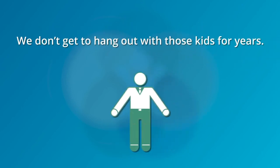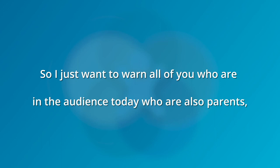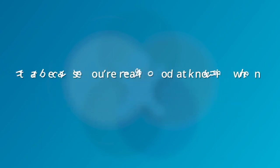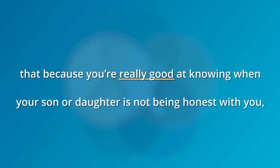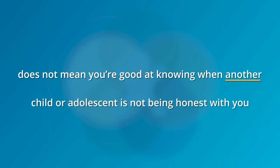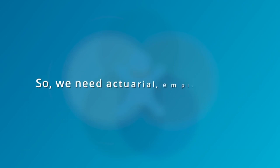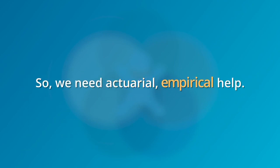We don't get to hang out with those kids for years. I want to warn all of you who are also parents that because you're really good at knowing when your son or daughter is not being honest with you does not mean you're good at knowing when another child or adolescent is not being honest or doing their best when you only see them a few times. So we need actuarial empirical help.